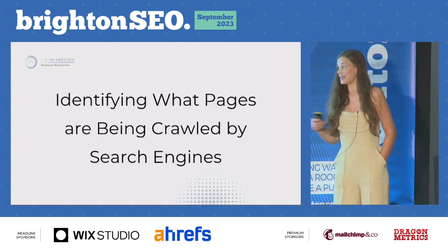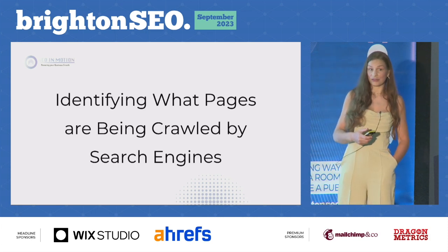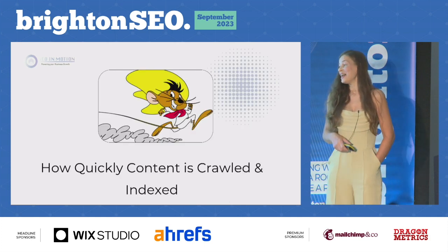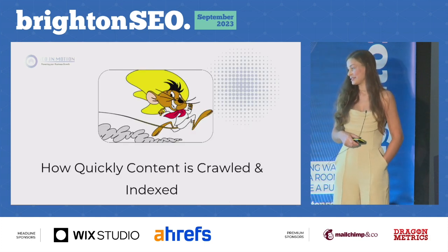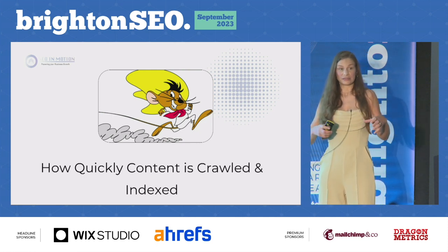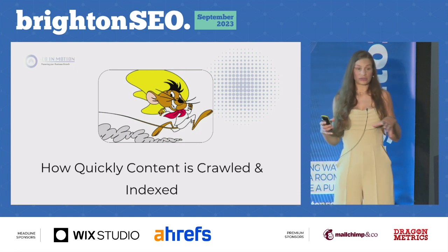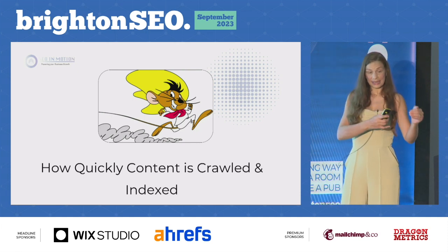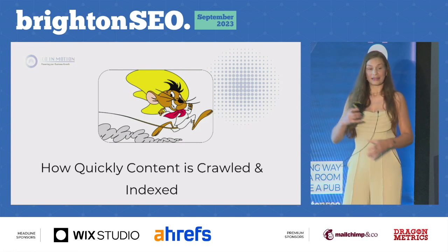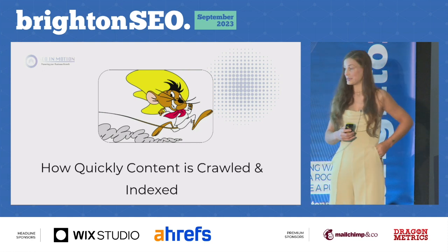We can identify what pages are being crawled by search engines, or what proportion of your site is being crawled if it's a large site. And how quickly content is crawled and indexed — this goes back to how important sections of your website are. If you've got really important user-intent content, it's going to be crawled a lot more frequently than content that doesn't meet user intent as well.